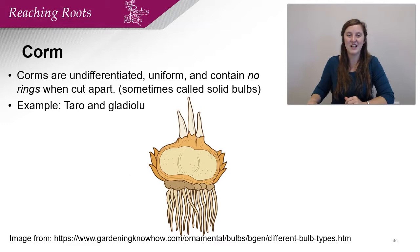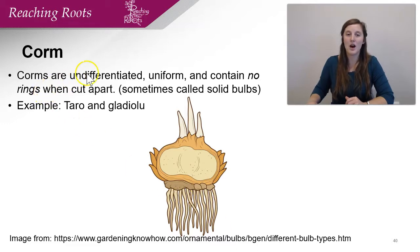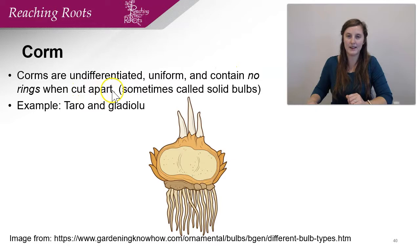The next one is a corm. The difference between a corm and a bulb is that bulbs have layers just like an onion — remember, an onion is an example of a bulb, as are daffodils and tulips. But a corm is undifferentiated, uniform flesh that contains no rings when cut apart. It's sometimes called a solid bulb. Examples are taro and gladiolus.